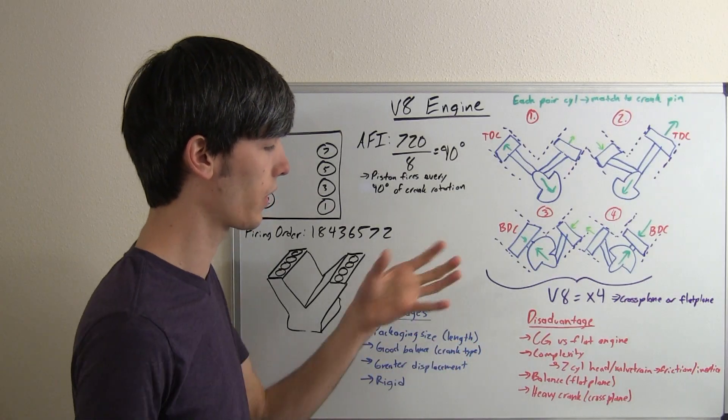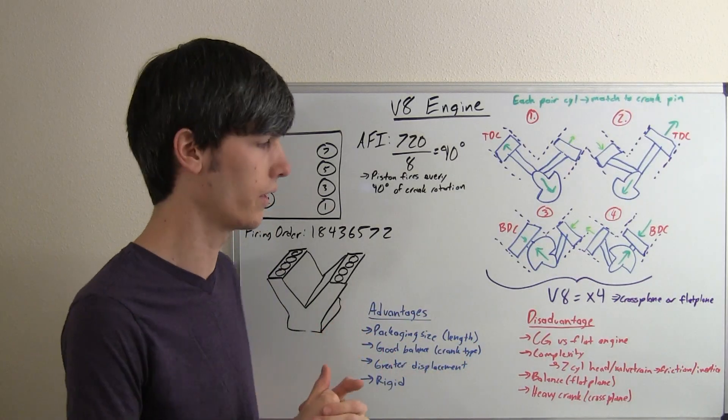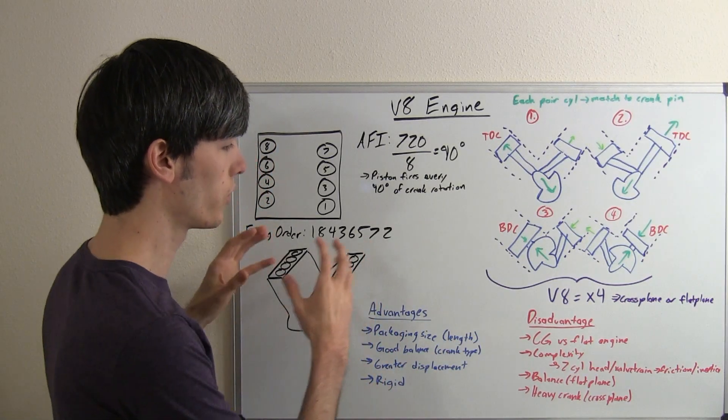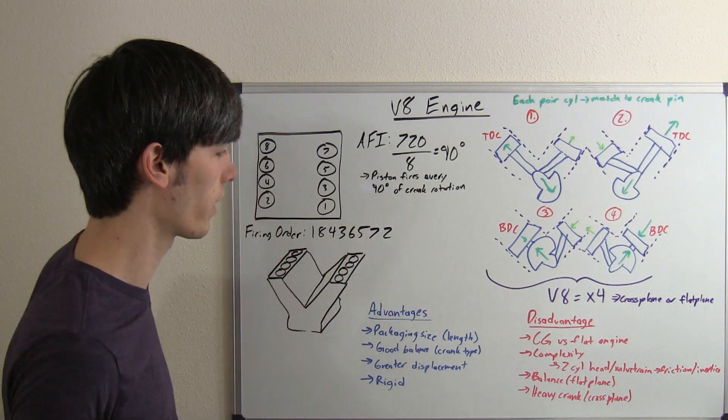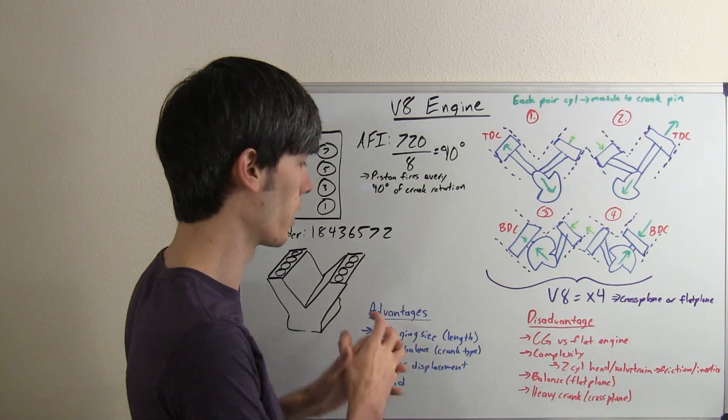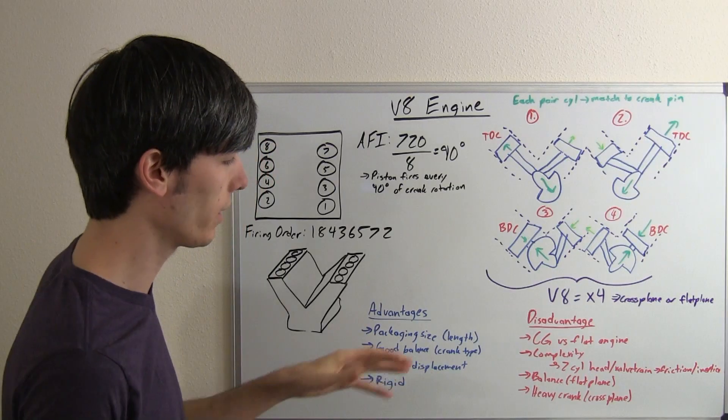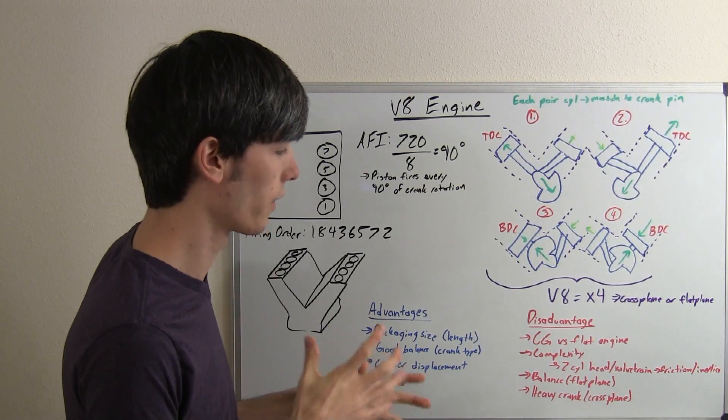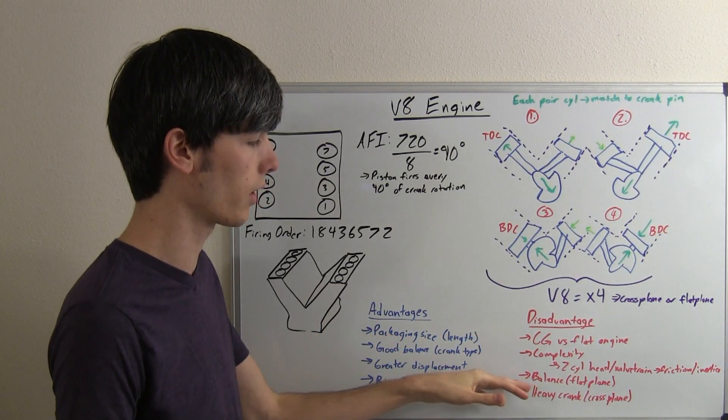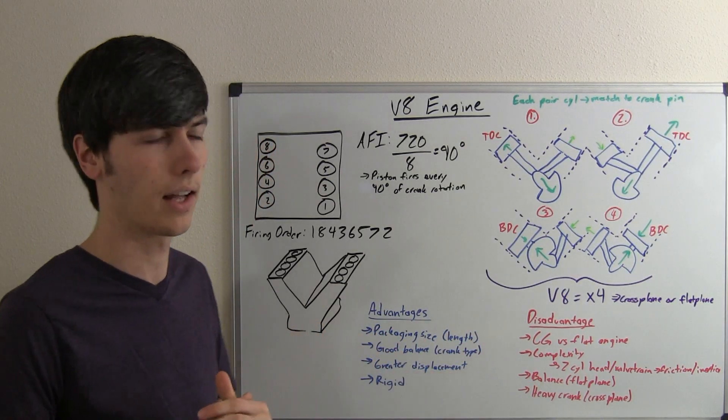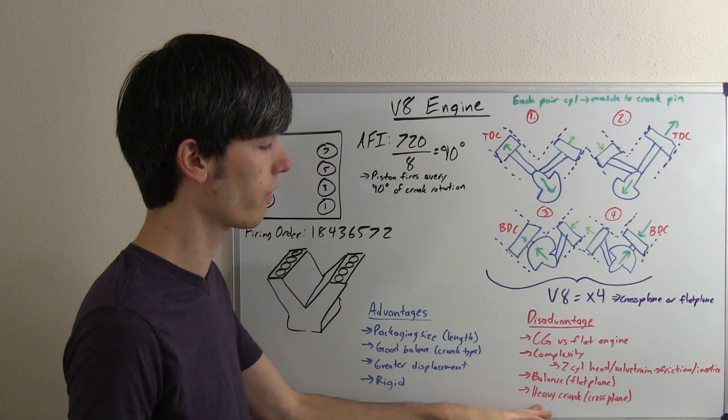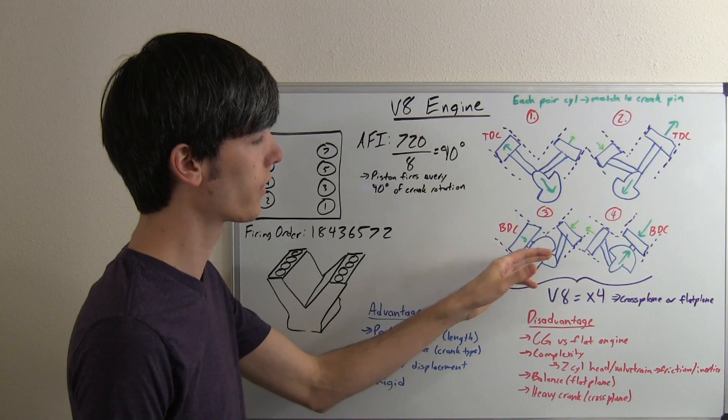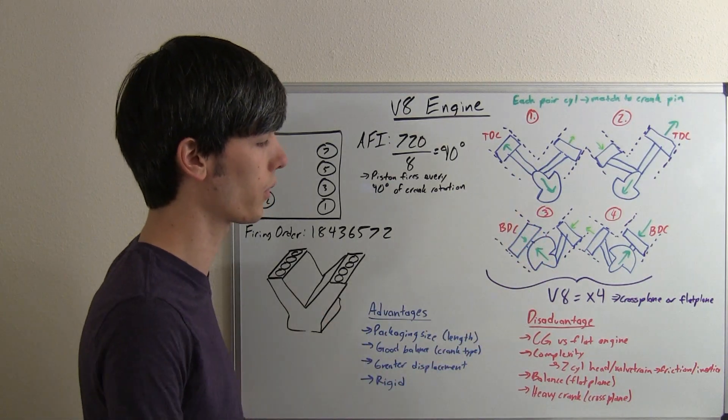Disadvantages. Well, the center of gravity is still fairly high compared to a flat engine or boxer engine. The complexity is high because you've got these two valve trains, two cylinder heads, you've got all of the added components and friction and inertia with doubling everything there. The balance of a flat plane crankshaft is not that great. There are some benefits and some downside, but basically, the secondary balance for a flat plane is not that good. I will get into more detail. And then, you're going to have a heavier crankshaft with a cross plane V8 because you're going to be adding this counterweight in order to compensate for the primary forces.